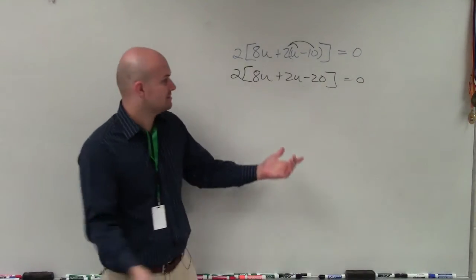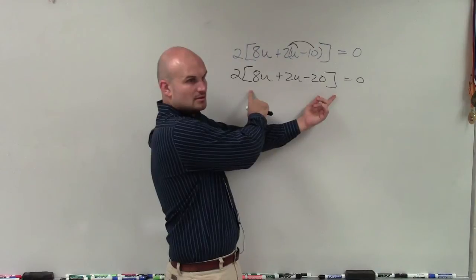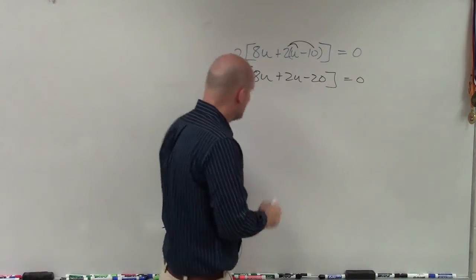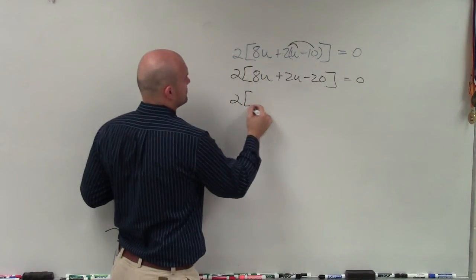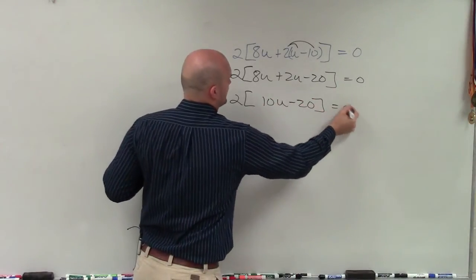Now, again, parentheses. Inside of here, can I simplify inside my parentheses? Yeah, I can combine the 8u and the 2u. So I have 2 parentheses or bracket, 10u minus 20 equals 0.